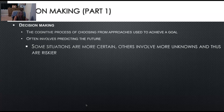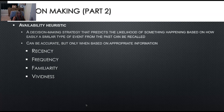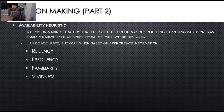Decision making is the cognitive process of choosing from approaches used to achieve a goal, and it often involves predicting the future. Some situations are more certain; others involve more unknowns, and of course when there are unknowns there are risks involved. Availability heuristics: that's a decision-making strategy that predicts the likelihood of something happening based on how easily a similar type of event from the past can be recalled. It can be accurate, but only when based on appropriate information — they go into recency, frequency, familiarity, and vividness.